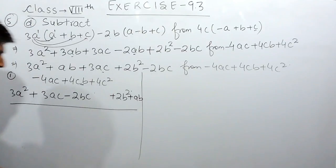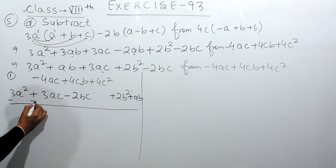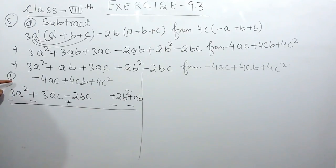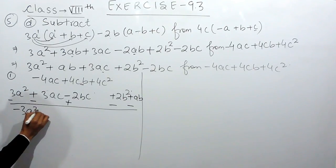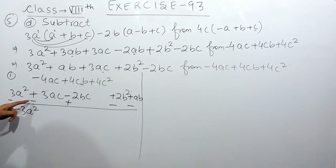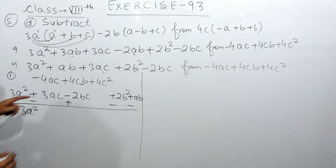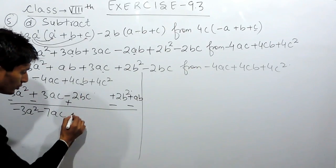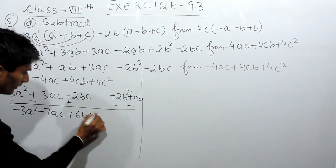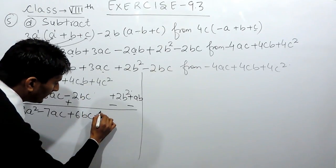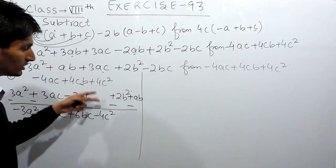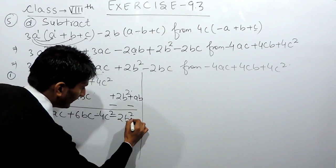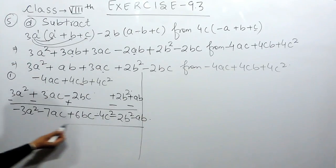So there is no like term to 3a square, so it remains as it is. These ac terms can be solved: this is negative and this has become negative, so negative and negative is positive — 4 plus 3 is 7 with negative sign because the greater value has negative sign. This is plus plus, so 4 plus 2 is 6 with positive sign. 4c square will remain as it is as there is no other term to solve with. And negative 2b square and negative ab will remain as it is because these are single terms. The sign has changed to negative, so you write negative here. So this is the answer.